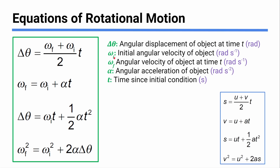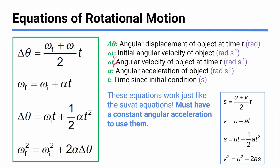Omega is the Greek letter for angular velocity — it looks like a w but it's officially lowercase Greek omega. We use subscripts i for initial and f for final, measured in radians per second. Angular acceleration uses Greek letter alpha, measured in radians per second squared, and t is still time. You approach these problems exactly like regular SUVAT — make a table with the five values and decide what you have.